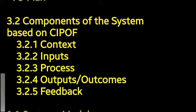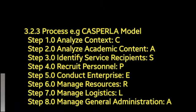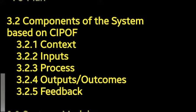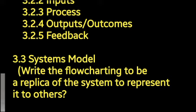When you talk about Process, you talk about steps 1, 2, 3, 4, 5 that need to be done in logical order. Then 3.2.4 is outputs or outcomes — it's the same thing, don't separate them. And 3.2.5 is feedback. Feedback is the controlling mechanism of the system; impact is one form of feedback, and satisfaction is also feedback.